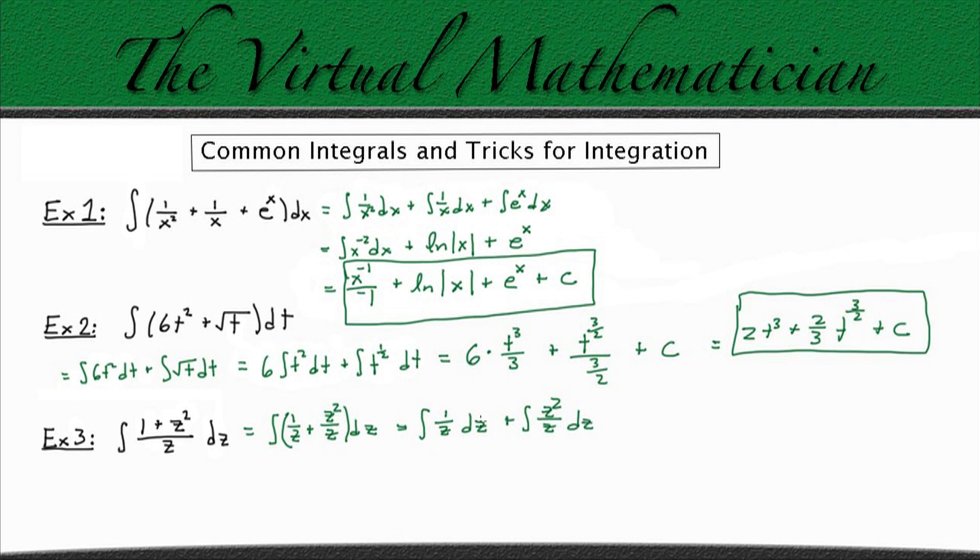From example 1, we know the integral of 1 over z dz equals the natural log of the absolute value of our variable. And this simplifies into just z, because z squared divided by z just gives us z. So this is the integral of z dz. We can use a power rule to evaluate this one. So this is z to the 1 power, so we have z to the 1 plus 1 power, which is going to be z squared, divided by our new power, plus our constant, c. And that's how we evaluate example 3.